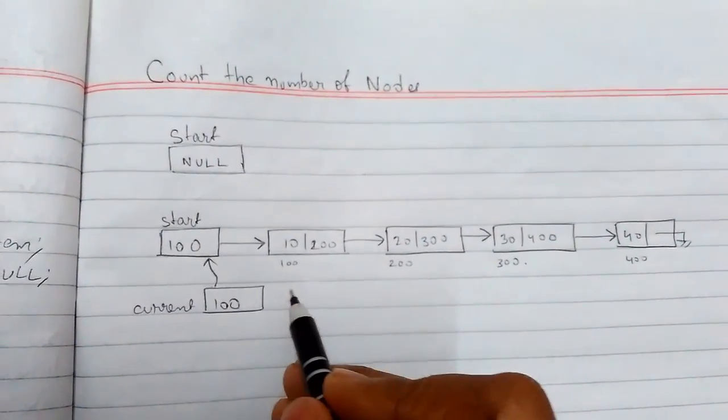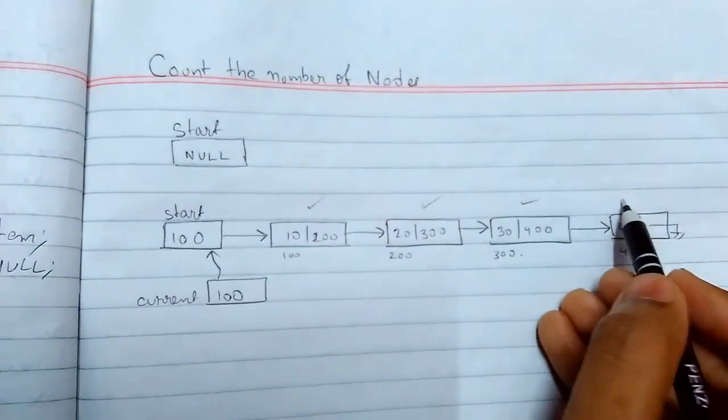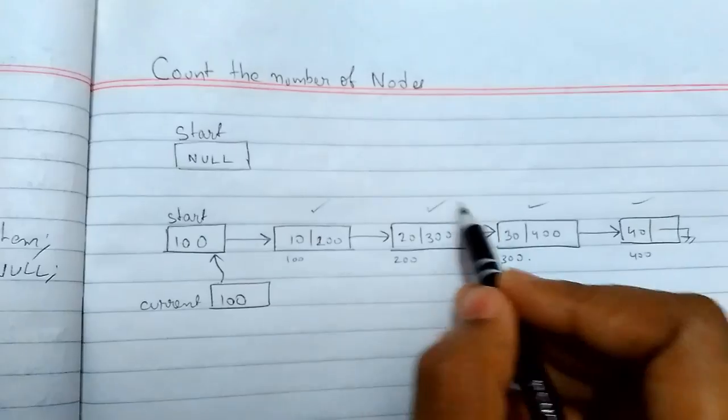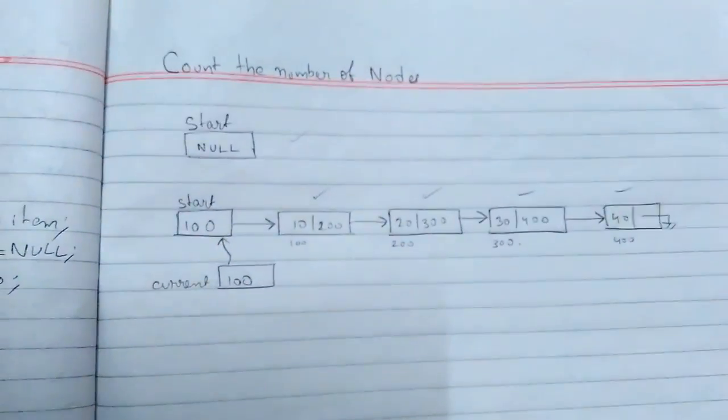Counting refers to finding how many nodes are present in the list. For example, if there are nodes, it will count one, two, three, four, so it will show four. For an empty list, it will show zero.